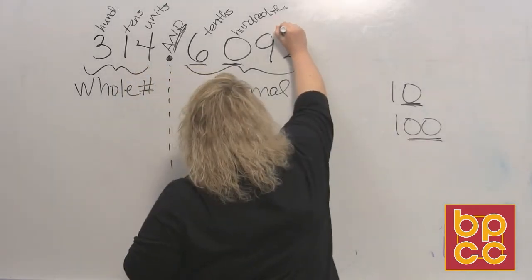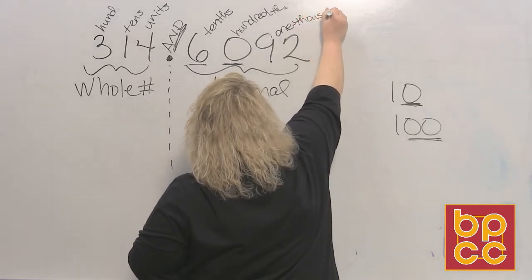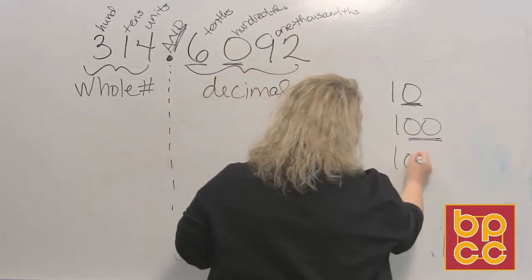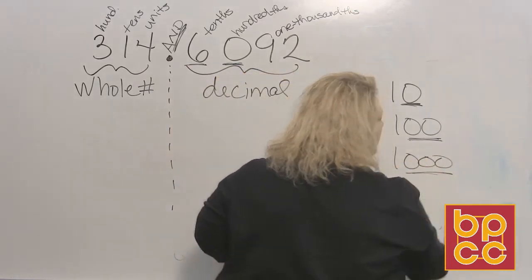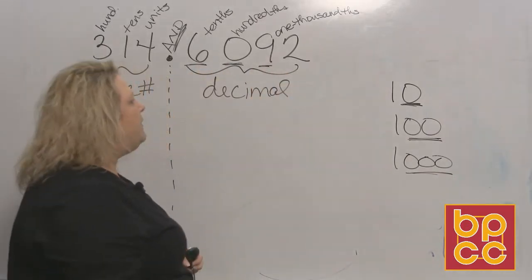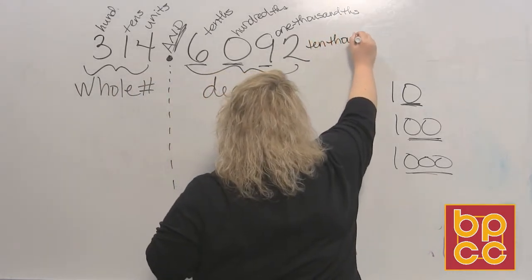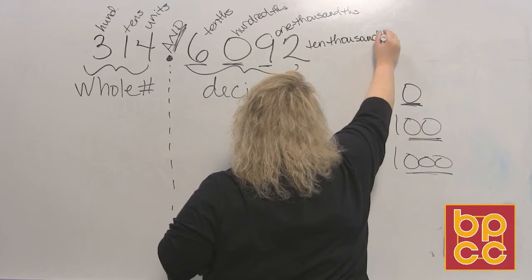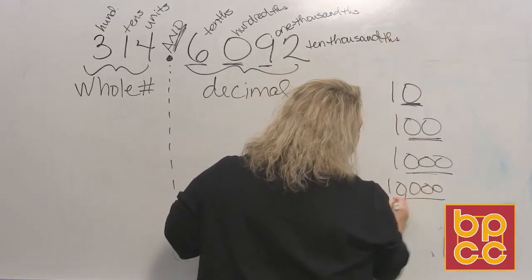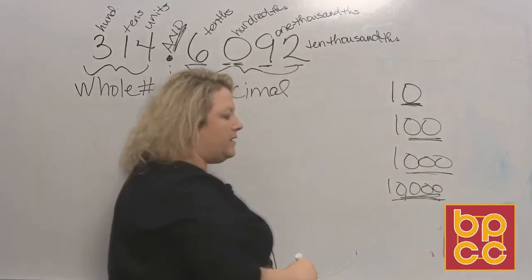The nine would be in the thousandths place because the number one thousand has three zeros — that's one, two, three digits behind the decimal. And then our last one is two, and that is ten-thousandths, because the number ten thousand has four zeros, so that's one, two, three, four places behind the decimal.